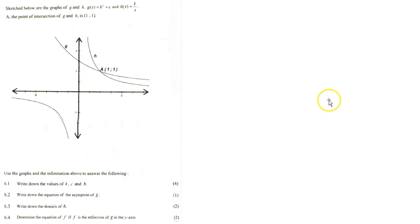We are given that g(x) is equal to b to the x plus c, and h(x) equals k over x.